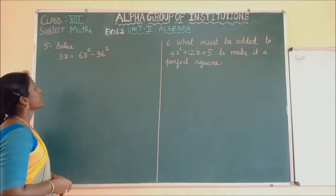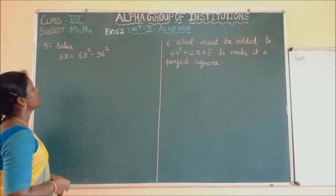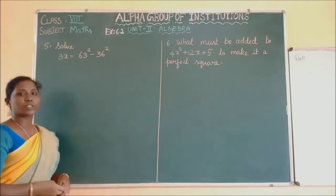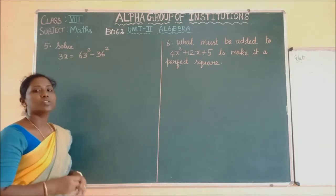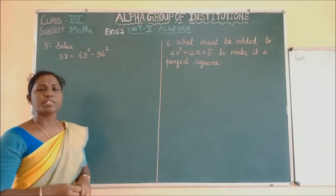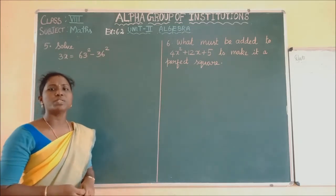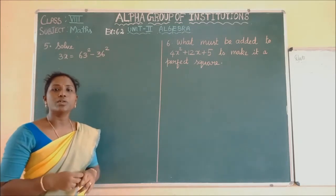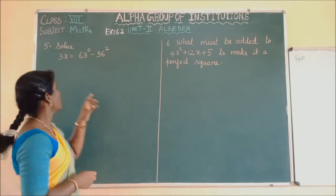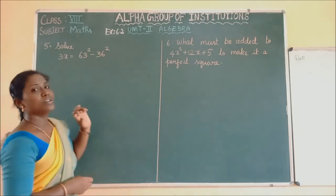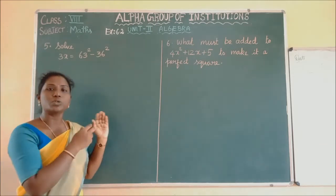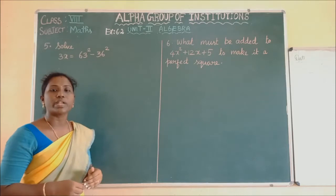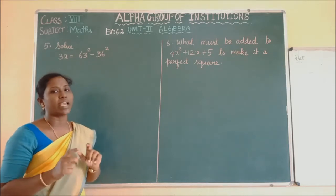Problem number 5: Solve 3X equals 63 square minus 36 square. What does 'solve' mean? We have to find the unknown value. What is the unknown value here? X. So we have to solve the given expression and find the value of X.